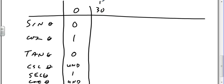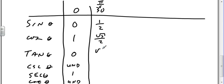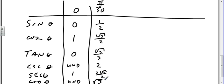At 30 degrees, or pi over six, I've got sine of one-half, cosine of square root of three over two, and tangent of square root of three over three. Cosecant is two, secant is two times the square root of three over three, and cotangent is square root of three.